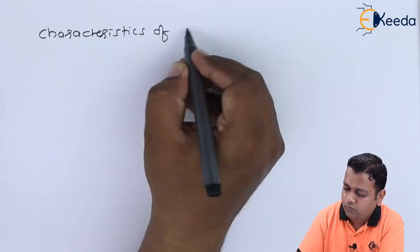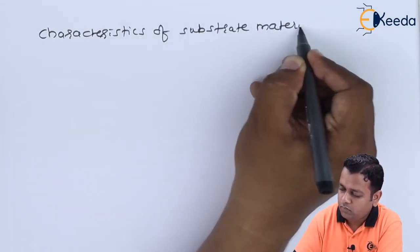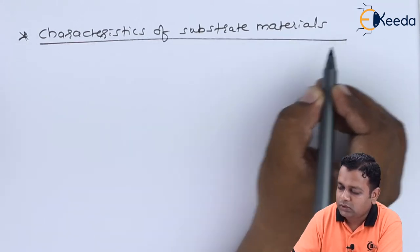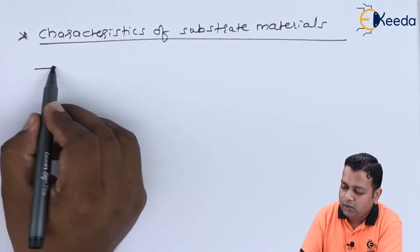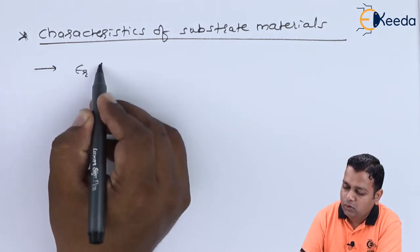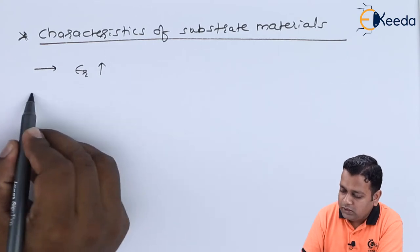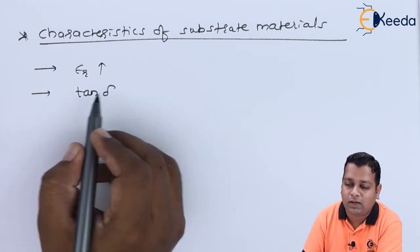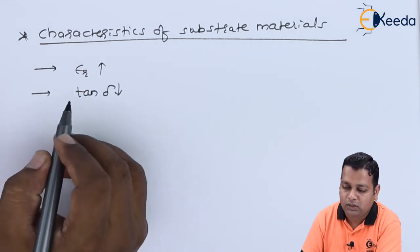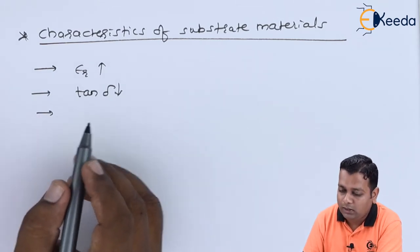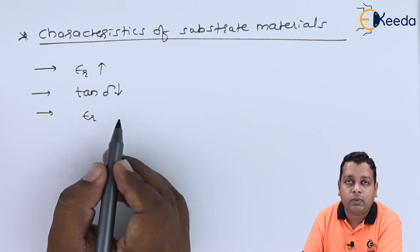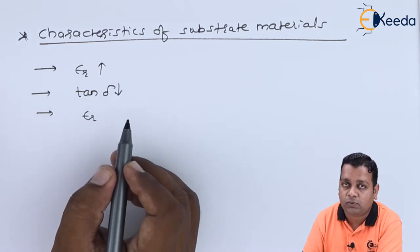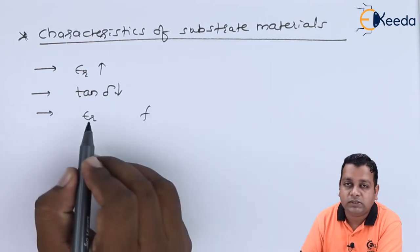The characteristics of substrate materials can be stated as follows: they have a very high dielectric constant, the dissipation factor or loss tangent represented by tan delta is of very low order, and the dielectric constant epsilon-r remains constant with respect to changes in frequency — so it is frequency independent.